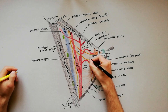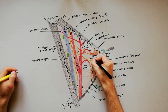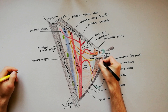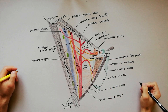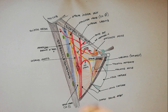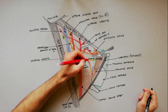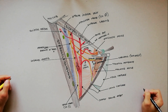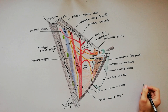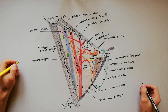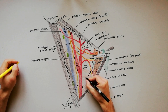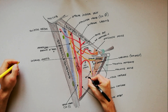The internal laryngeal nerve is sensory and passes forwards to disappear deep to the thyrohyoid muscle. There, it pierces the thyrohyoid membrane to supply the laryngeal mucosa. It is accompanied by the superior laryngeal artery, a branch of the superior thyroid artery. The external laryngeal nerve is motor and descends to supply the inferior constrictor and cricothyroid muscles, after passing deep to the superior belly of the omohyoid.